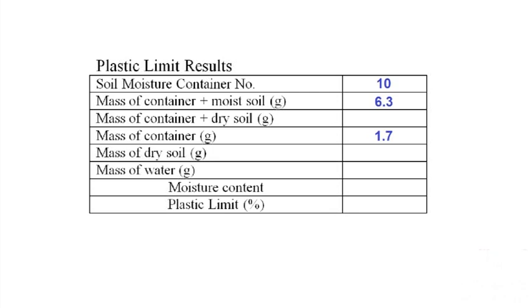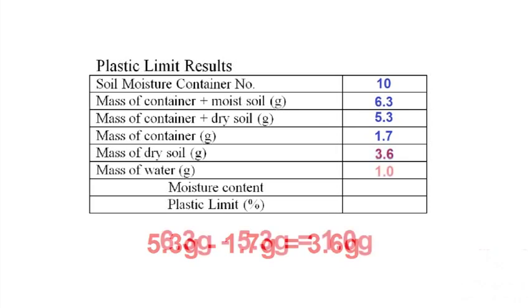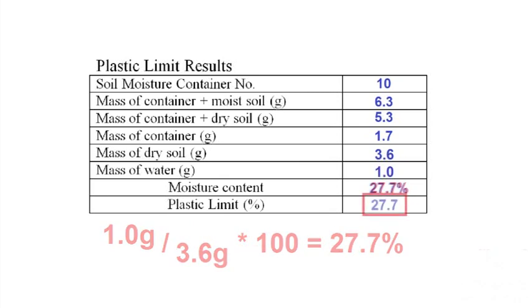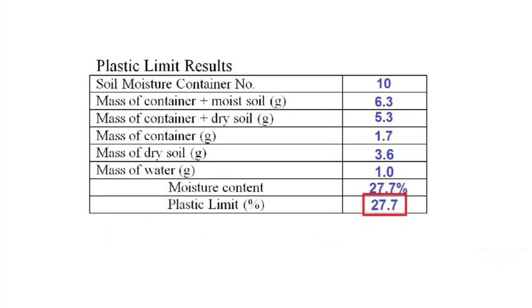After 24 hours in the oven, remove the sample and record the mass of the now dry soil plus the container. Calculate the mass of dry soil. Calculate the mass of water. Finally calculate the moisture content. The plastic limit is equal to this moisture content.